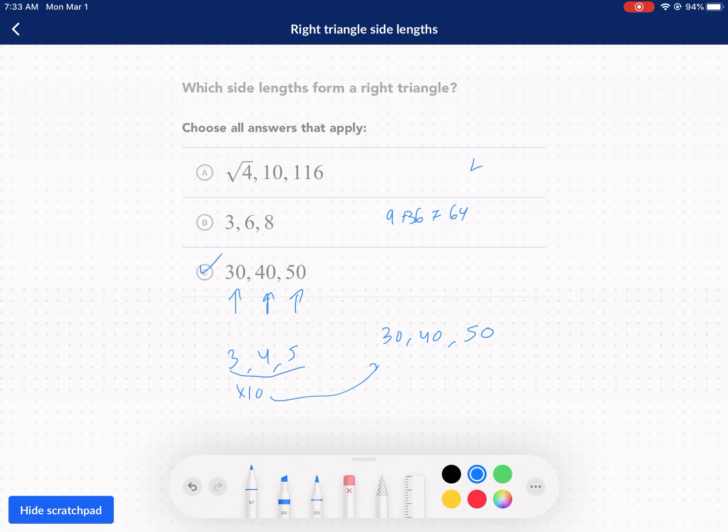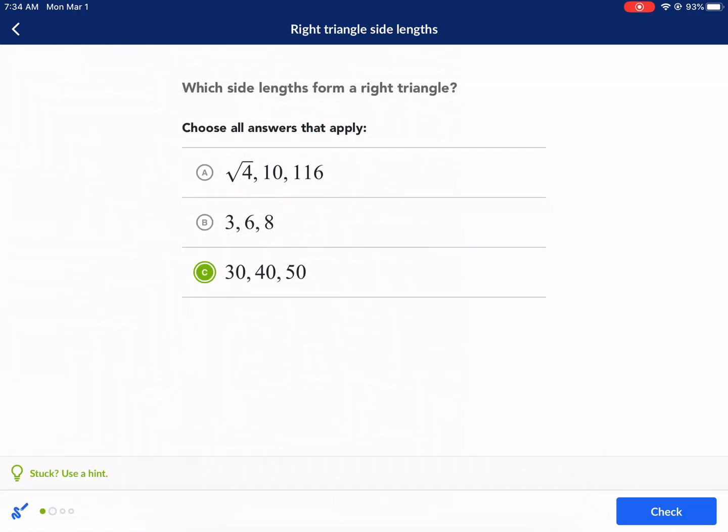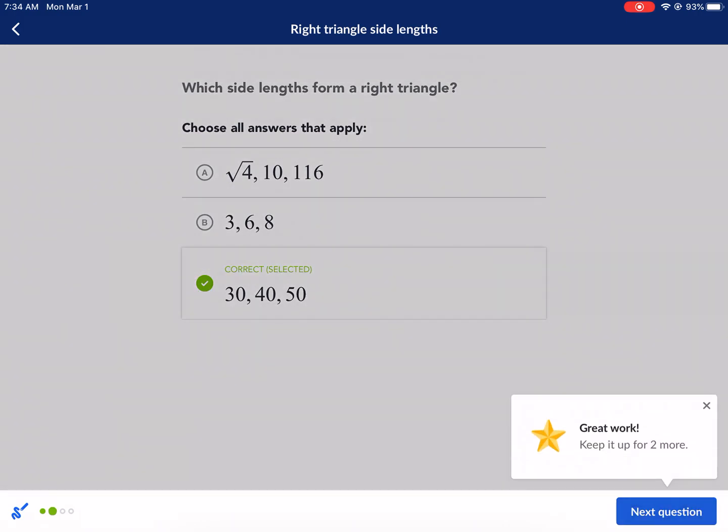Nine plus 36 is not equal to 64. So B is not an option. And then we have four plus 100. This squared equals four. 10 squared is 100. It does not equal 116. So it's only going to be C for our final answer.